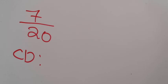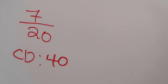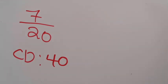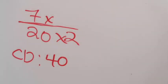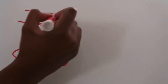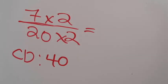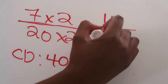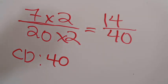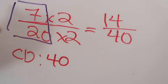Now I'm going to do the same thing for 7/20. I know my common denominator is 40, so I need to use multiplication to make 20 become 40. I ask: what will I multiply 20 by to get 40? I'll multiply 20 × 2. Whatever I do to the denominator must be done to the numerator, so I multiply 7 × 2. 7 × 2 = 14 and 20 × 2 = 40. So an equivalent fraction to 7/20 is 14/40. Eating 7/20 of a pizza is the same as eating 14/40 of that same pizza.